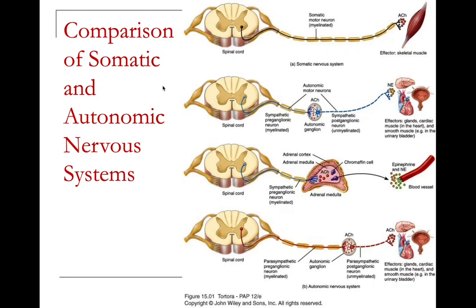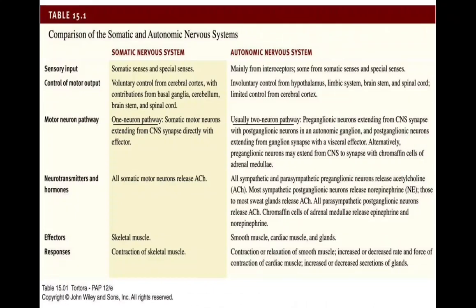There is also a separate reflex arc when blood pressure is too low. Comparing somatic and autonomic nervous systems: sensory input for the somatic system includes both somatic and special senses, while for the autonomics it is mainly from interoceptors. Control in the somatic system is voluntary; in the autonomics it is involuntary. Motor neuron pathways use one neuron in the somatics, and typically two neurons in the autonomics.